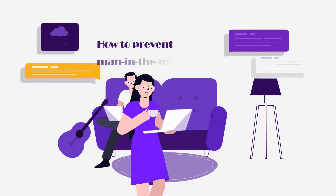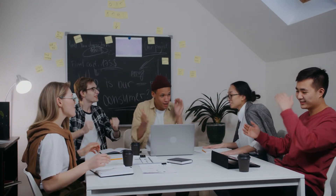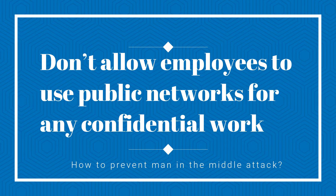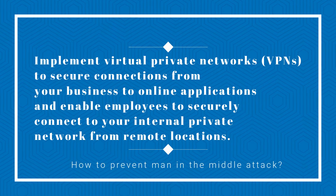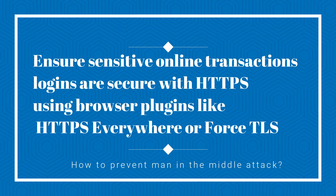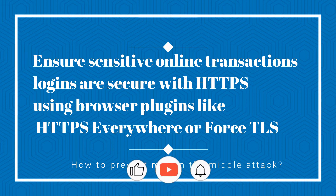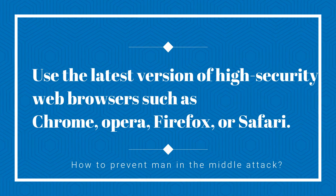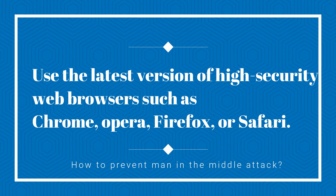Now let's look at how to prevent man-in-the-middle attacks. Here are a few steps businesses of any size can take to reduce risk. First, don't allow employees to use public networks for any confidential work. Next, implement virtual private networks to secure connections from your business to online applications and enable employees to securely connect to your internal private network from remote locations. Next, ensure sensitive online transactions and logins are secured with HTTPS using browser plugins like HTTPS Everywhere or force TLS. Next, use the latest version of high-security web browsers such as Chrome, Opera, Firefox, or Safari.